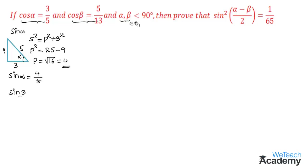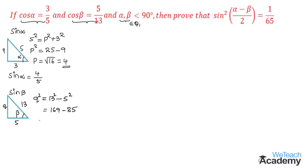Now let us find sin β using cos β. Consider a right-angle triangle where cos β = adjacent/hypotenuse = 5/13. So the adjacent side is 5, the hypotenuse is 13, and this angle is β. Let q be the opposite side. By Pythagoras theorem: q² = 13² − 5² = 169 − 25 = 144, so q = 12. Therefore sin β = 12/13. Let us name sin α = 4/5 as equation 1 and sin β = 12/13 as equation 2.